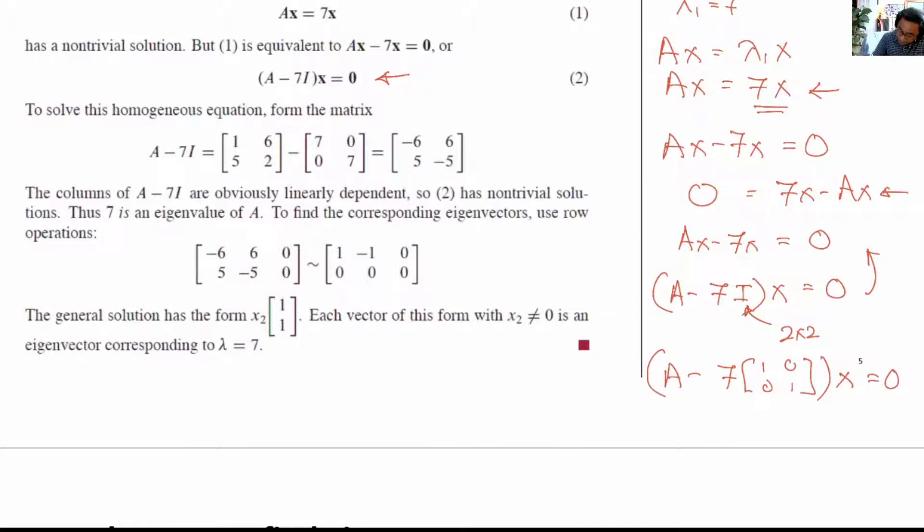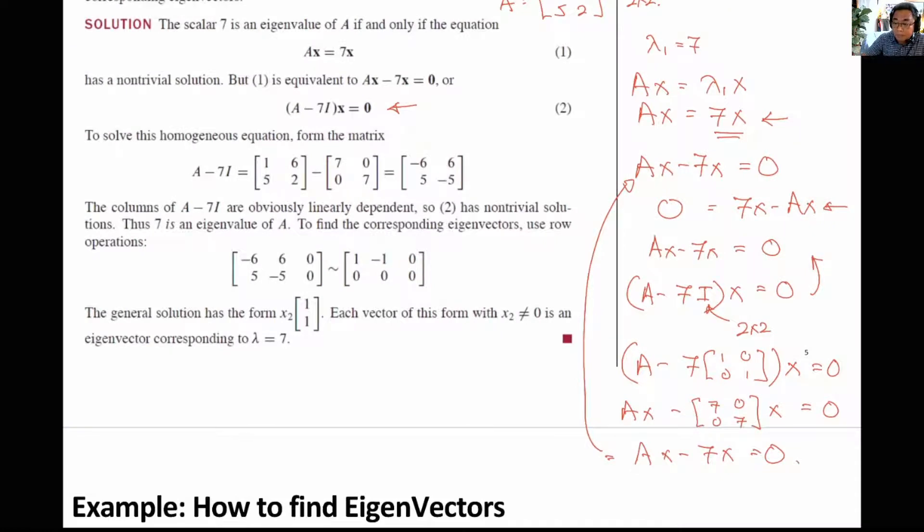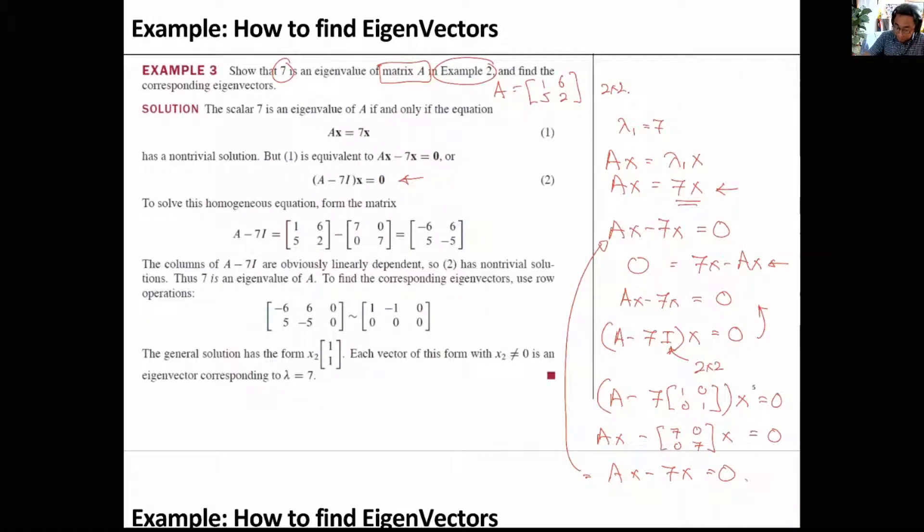Now if you open it up, it will be Ax minus [7, 0; 0, 7] times the vector x equals 0. And isn't this Ax minus 7x equals 0 as before, which is here. Now if you are convinced,